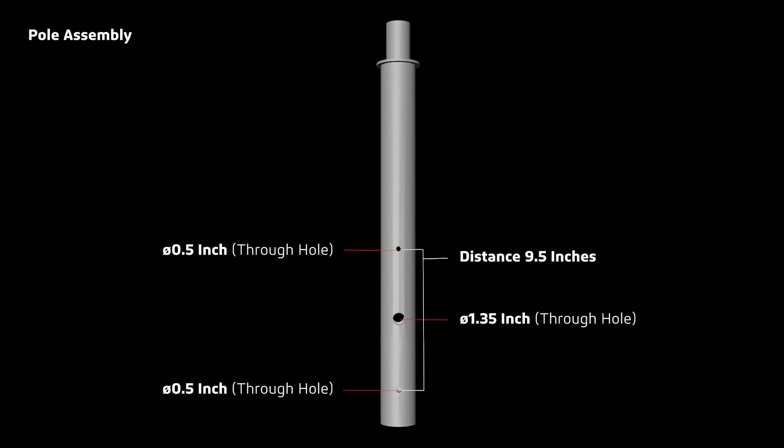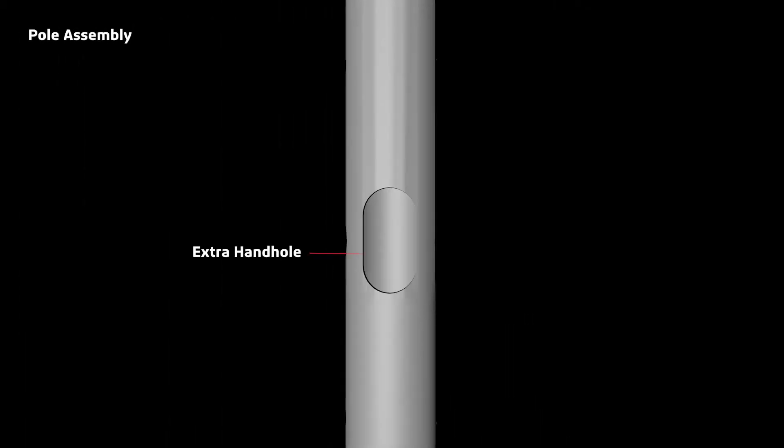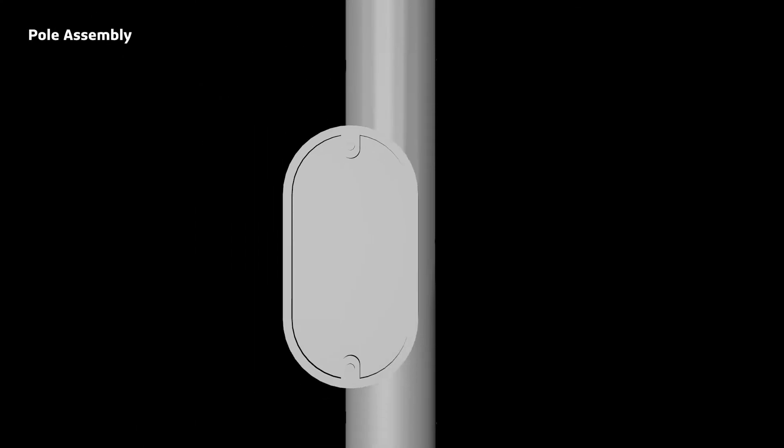Drill three holes through the pole. Top hole 0.5 inches, middle hole 1.35 inches, and bottom hole 0.5 inches. Next to the 1.35 inch center hole, drill an extra hand hole so that you can connect all the cables inside of the pole.